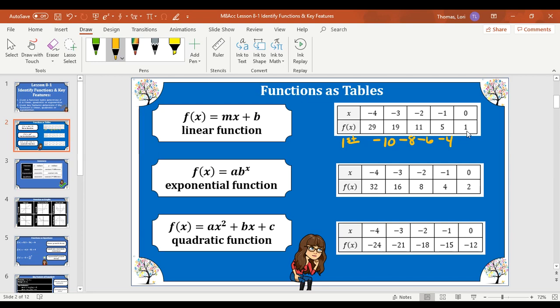So now we check to see the second difference. So that's just the difference between the first differences. So from negative 10 to negative 8 is plus 2. From negative 8 to negative 6 is plus 2. And from negative 6 to negative 4 is plus 2. So there is a constant second difference. So this means that this function table is quadratic.